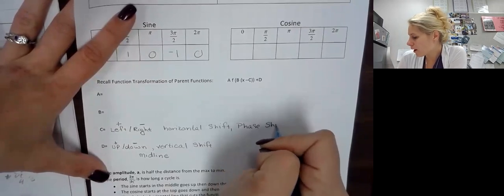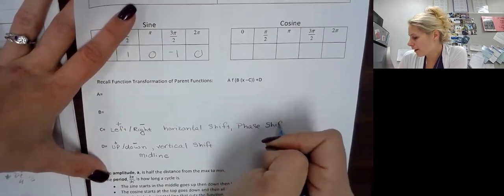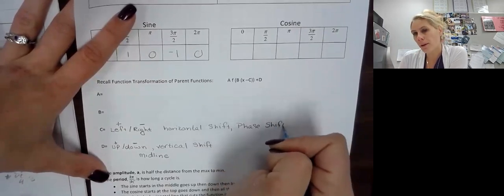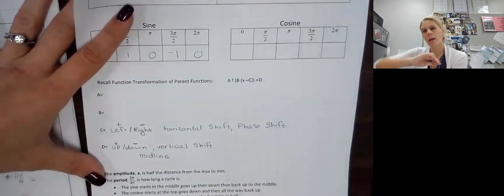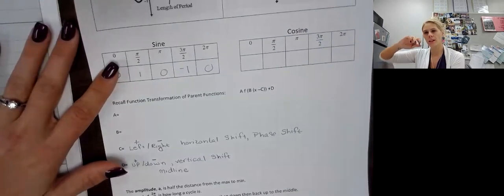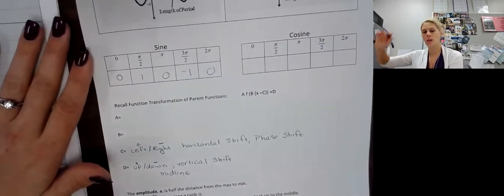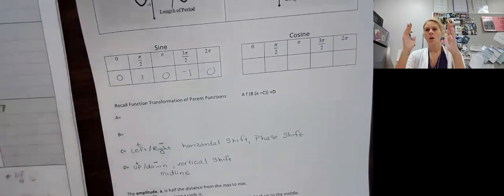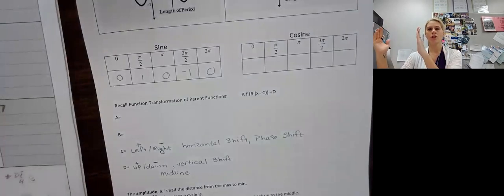Think of our period — the period was where it did a full rotation and then it would start repeating. Well, we'll take that period and shift it over.